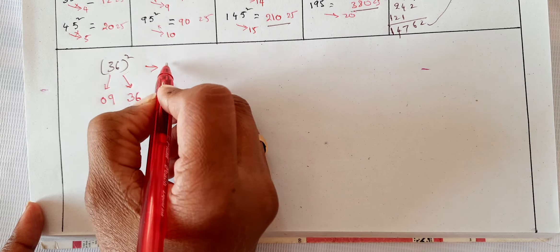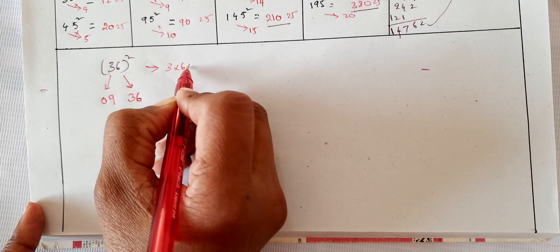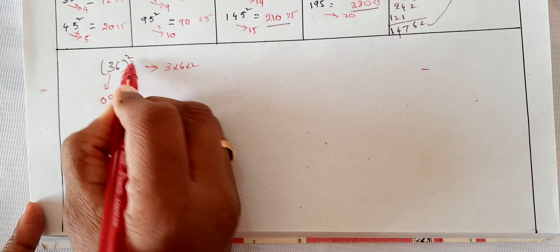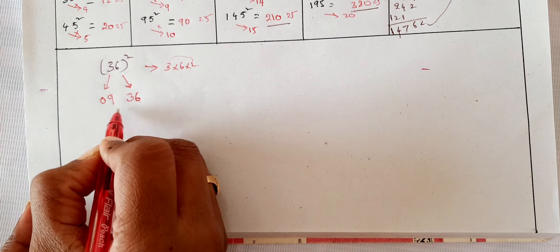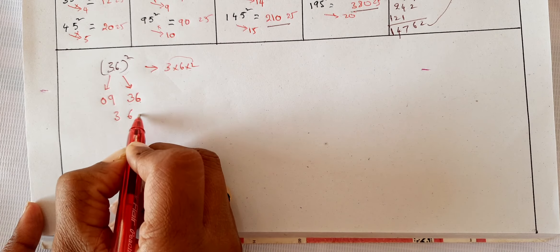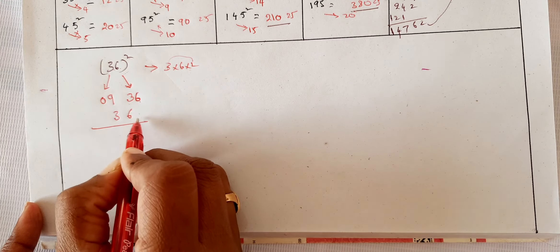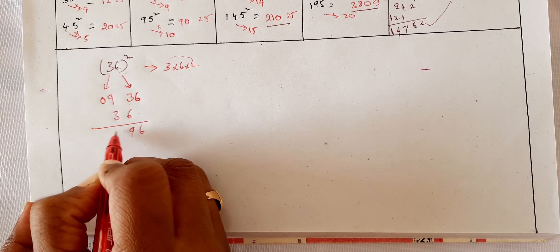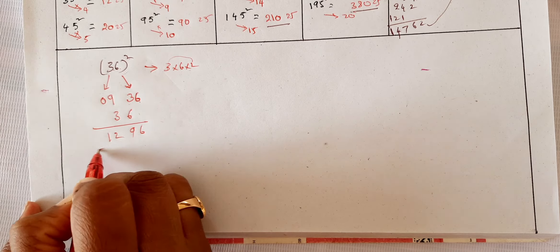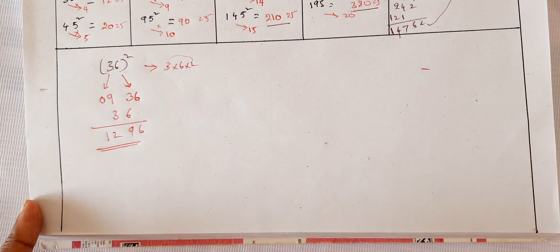Then, now the trick is here. 3 into 6 into 2. 3 into 6 into 2. Three twos are 6, six sixes are 36. So leaving the units place, you write down the 6. 9, 9 plus 3 is 12. 12, 96 is the square of 36.